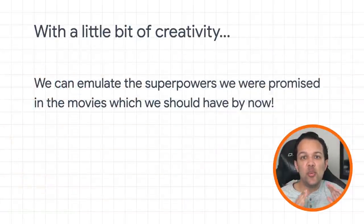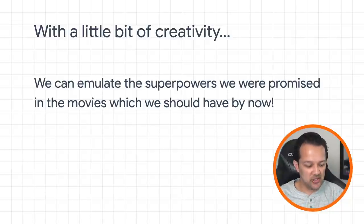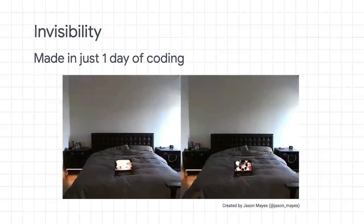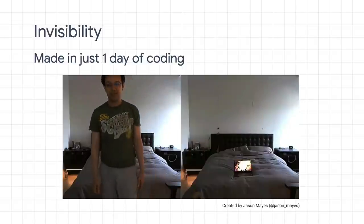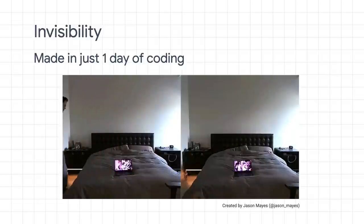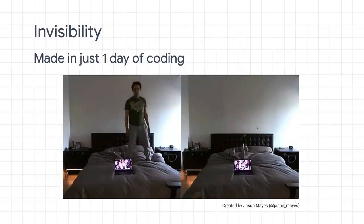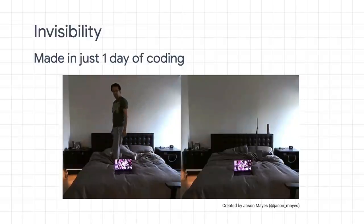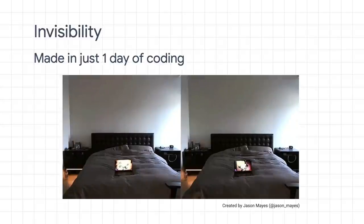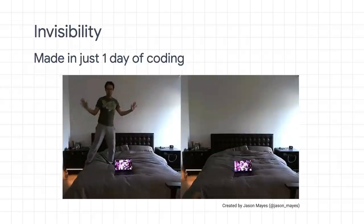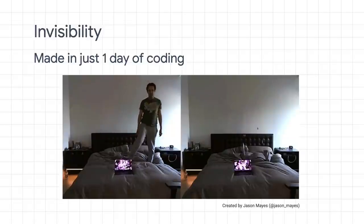With a little bit of imagination, we can emulate some of the superpowers we've promised from sci-fi movies. First up — invisibility. This is more advanced than simply replacing backgrounds with a static image; for that, you wouldn't even need machine learning. Notice how when I go behind the bed, the bed still deforms in the image as I move around, or how the laptop screen still plays as I move behind it. This prototype uses BodyPix to calculate where the body is not, so it can learn all the background and keep updating parts where it's safe to do so. This whole prototype was made in just one day using our pre-made model and runs entirely in the browser.